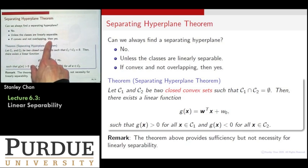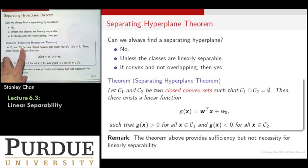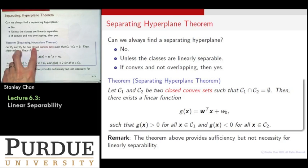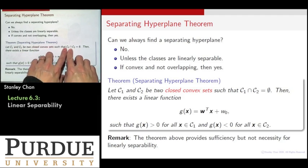If it is convex and not overlapping, then yes. The theorem says if you have two classes, C1 and C2, they are closed convex sets such that they don't overlap, this condition says that they don't overlap.